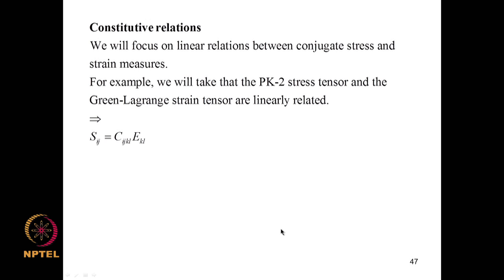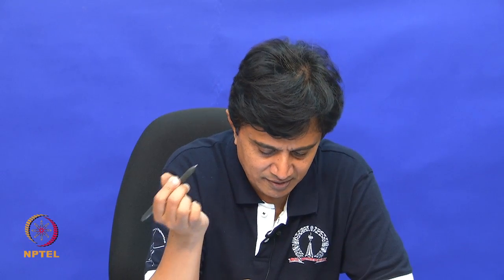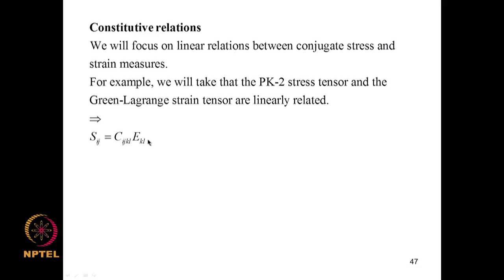We will focus on a linear relationship between conjugate stress and strain measures. We take the second Piola-Kirchhoff (PK2) stress tensor and the Green-Lagrange strain tensor to be linearly related — analogous to Hooke's law but with PK2 stress rather than Cauchy stress and Green-Lagrange strain rather than infinitesimal strain. If there is material non-linearity, this relationship becomes more involved.